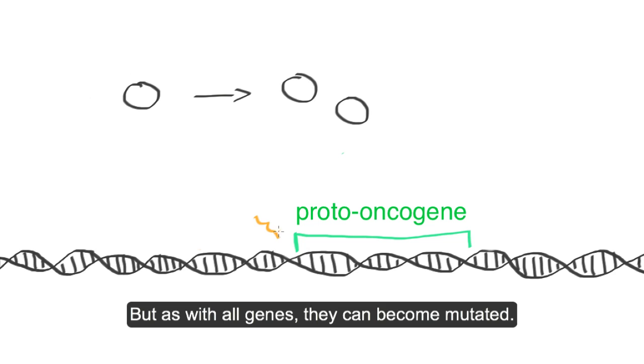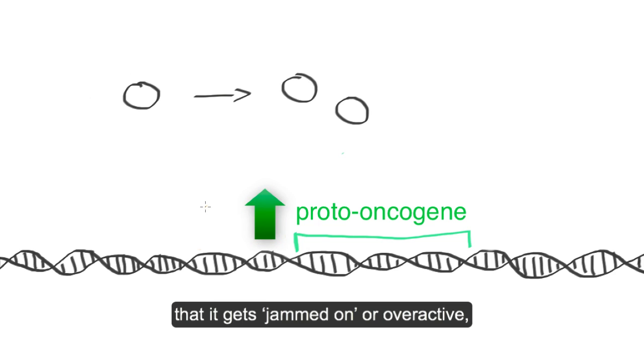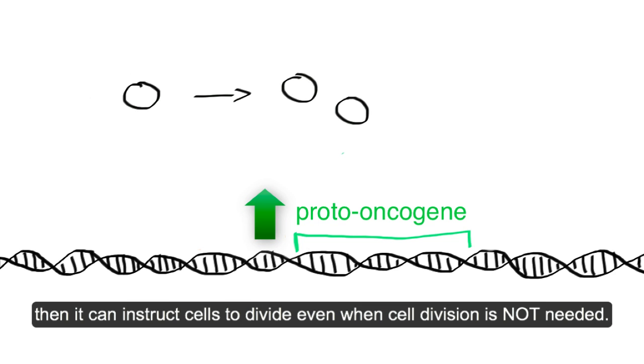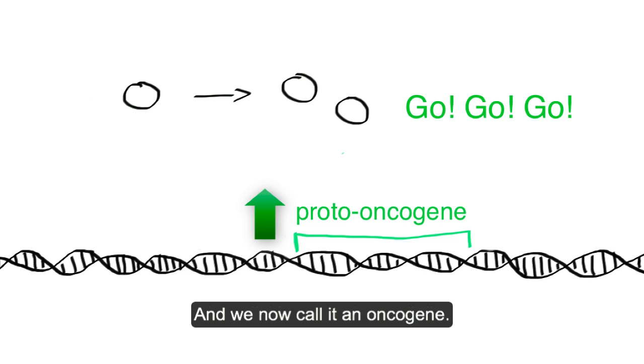But as with all genes, they can become mutated. And if a proto-oncogene becomes mutated in such a way that it gets jammed on, or overactive, then it can instruct cells to divide even when cell division is not needed. And we now call it an oncogene.